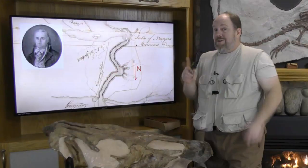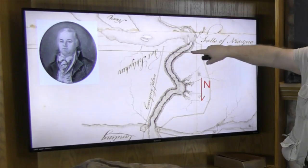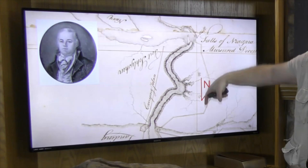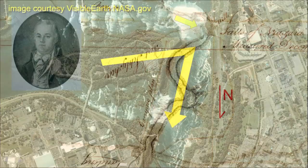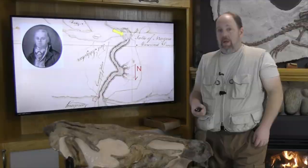Notice the island which parts the two falls — it's long and narrow, pointing only slightly away from due north and almost parallel with the gorge. This is in stark contrast to the modern day Goat Island, which is a wide island whose longitudinal axis runs almost due east-west. Ellicott's map lines up with Hennepin's drawing quite remarkably.